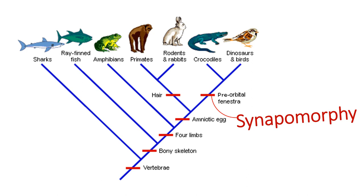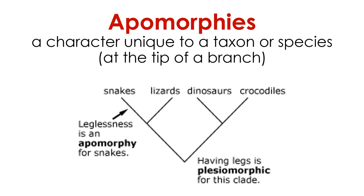Overall, it is the study of synapomorphies and how they are distributed among life forms on Earth that allows us to reconstruct evolutionary histories and produce cladograms. Of course, not all characters are synapomorphies, and so not all characters are as useful as bipedalism. Some characters are unique to certain species and taxa. For example, leglessness in snakes is an apomorphy — snakes evolved from lizards with legs but subsequently lost them. Knowing that snakes are legless does not help us determine their evolutionary history; in other words, leglessness is a useless character.